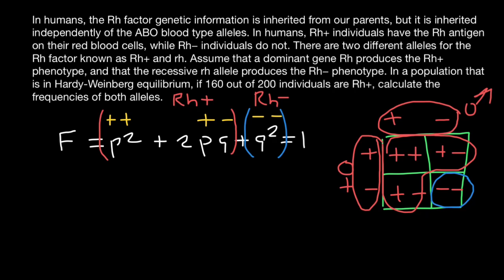This answers the question: if two Rh positive parents may have an Rh negative child. Yes, they can, if both of them would be heterozygous for this allele.